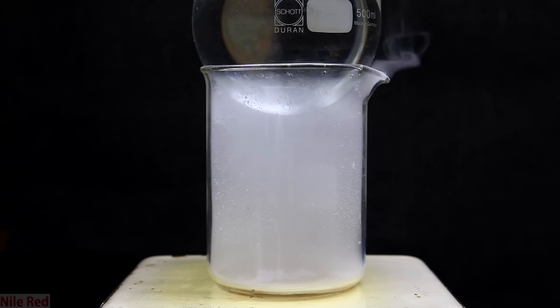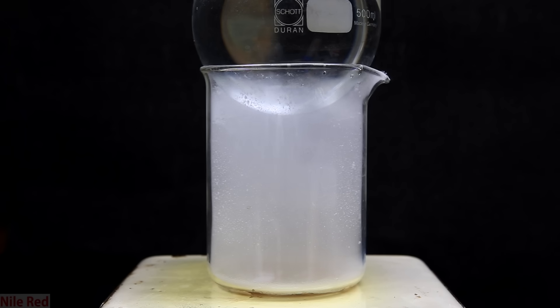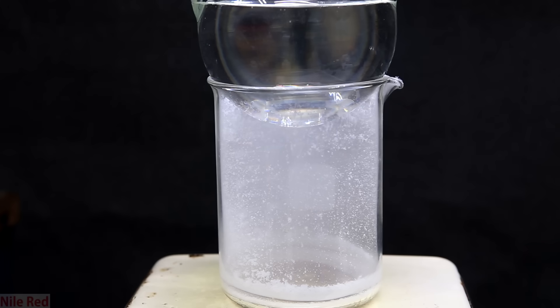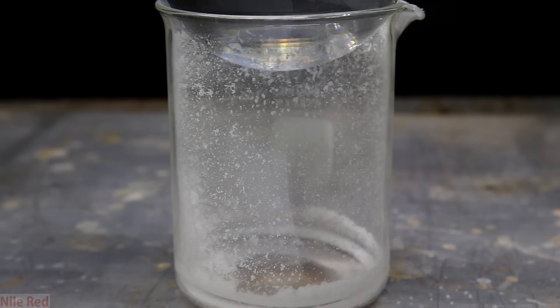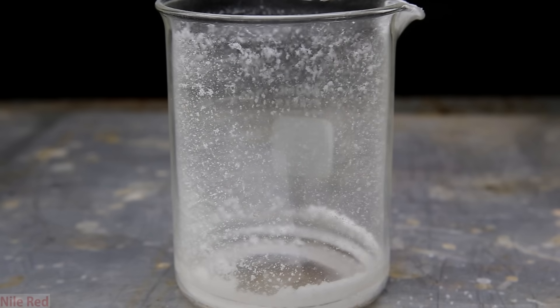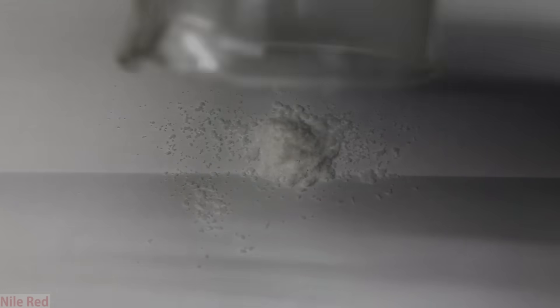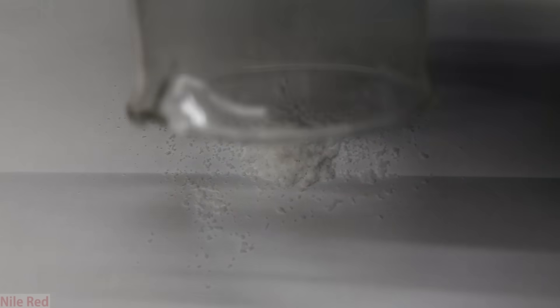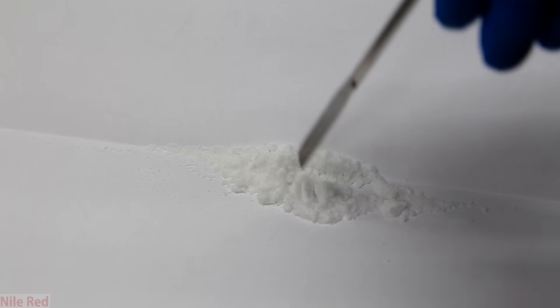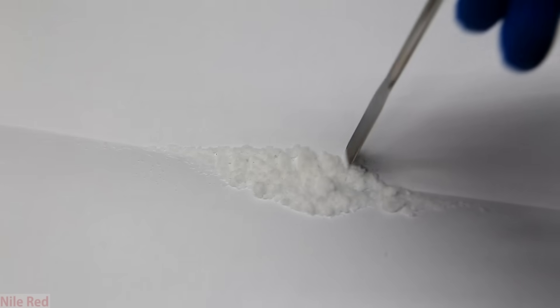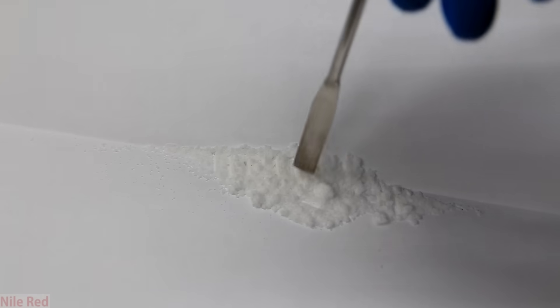On top of the beaker is placed a round bottom flask that's filled with cold water to try to limit the amount of caffeine that escapes. When we feel like enough caffeine is sublimated and collected on the walls and the sides, we can take it off the hot plate and let it cool. It's really important not to remove the round bottom flask while the beaker is still hot. When the beaker is turned upside down, some very nice white powdered caffeine falls out. This is a pretty efficient method of purifying caffeine and most of the impurities simply just burn or char on the bottom of the beaker and stay there.